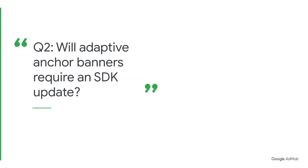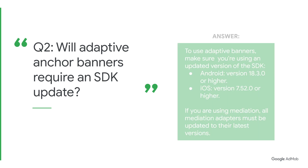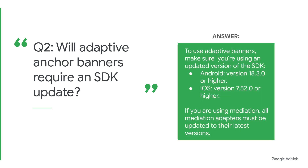Question 2: Will Adaptive Anchor Banners require an SDK update? Yes. To use Adaptive Banners, make sure you're using an updated version of the SDK. For Android, it's version 18.3.0 or higher. For iOS, it's version 7.52.0 or higher. If you are using Mediation, all Mediation Adapters must be updated to their latest versions.